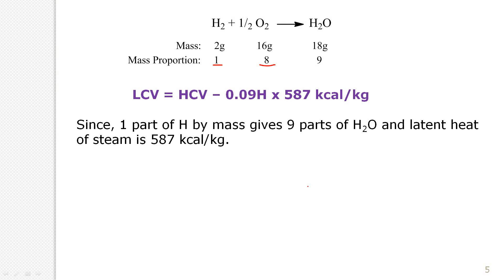Let us do a small exercise. After the HCV calculation, we know the LCV definition: LCV = HCV − latent heat of steam, which we can write as HCV − 0.09H × 587 kilocalories per kg, where H is the percentage of hydrogen present in the fuel. We know that one part of hydrogen by mass gives 9 parts of water, so we subtract that latent heat of steam.